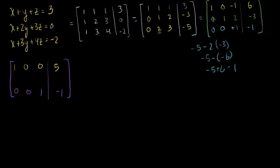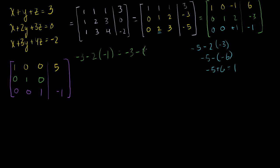Now I want to zero out the z-entry in the second row. I'll replace it with the second row minus 2 times the third row: 0 minus 2 times 0 is 0; 1 minus 2 times 0 is 1; 2 minus 2 times 1 is 0; and minus 3 minus 2 times minus 1 is minus 3 plus 2, which equals minus 1. So the second row becomes 0, 1, 0, minus 1.